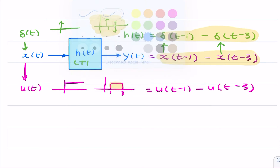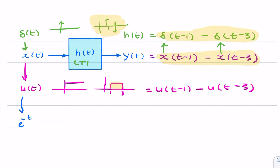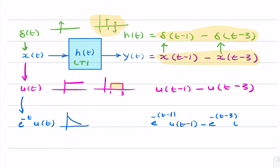We could take any other function. We could replace x with, say, e to the minus t, u of t. That would look something like that. And y of t, in that case, would be e to the minus t minus 1, u of t minus 1, minus e to the minus t minus 3, u of t minus 3. And that would look like this — you'd have that, and then at 3 seconds you would have a negative version of that.